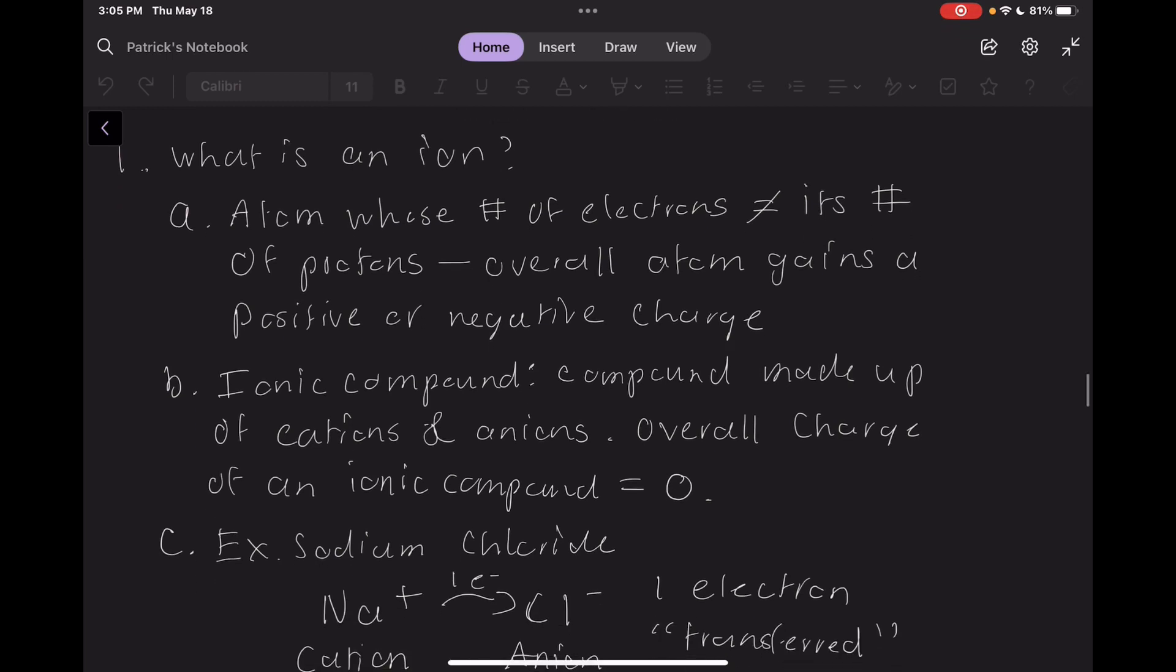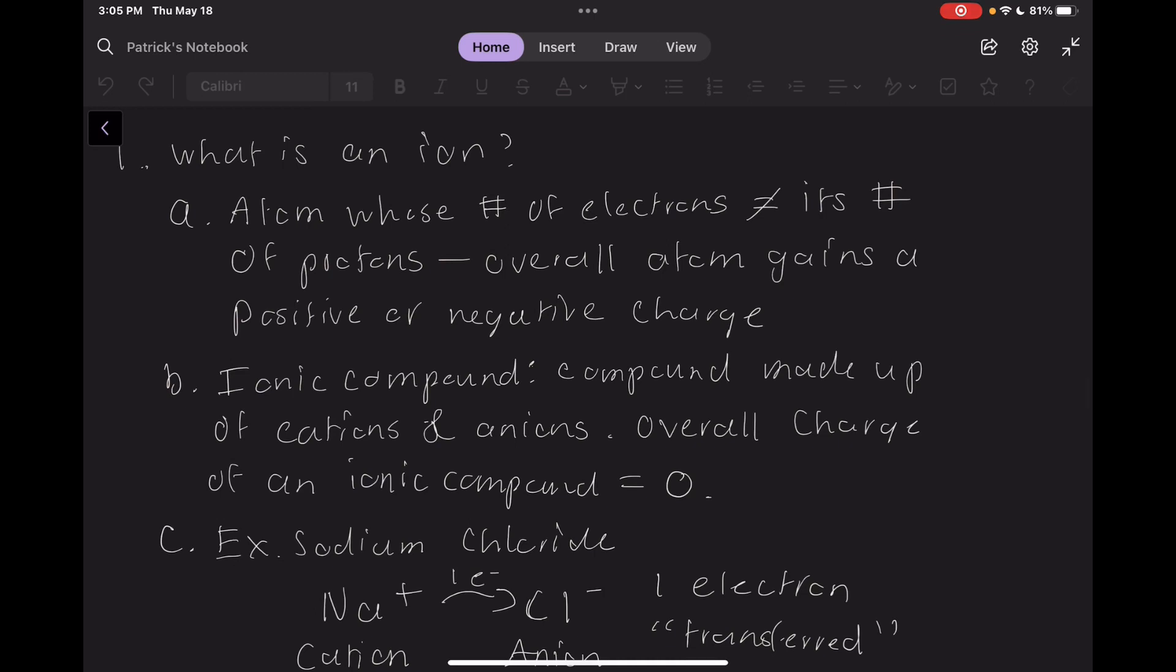An ionic compound, then, is a compound made up of cations with positive charges and anions with negative charges. The interactions between cations and anions mean that the charge of the overall compound is equal to zero, since the positive and negative charges cancel one another out.